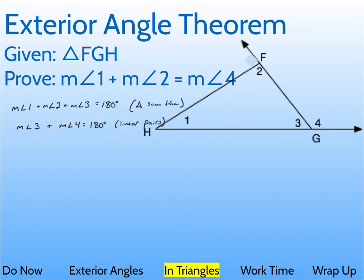And this is just called the transitive property or substitution, either way you want to do it. It's kind of like a double substitution, but yeah, since this is 180 and this is 180, we can set them equal to each other.